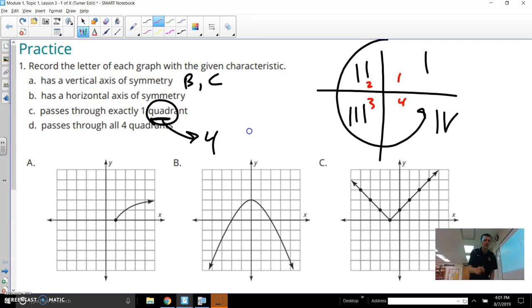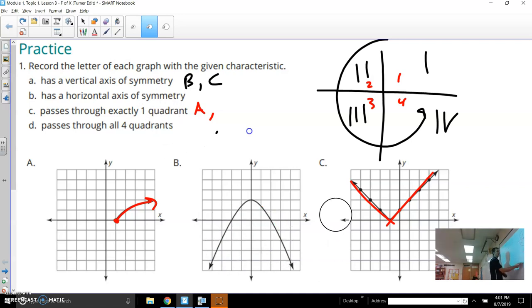It says it passes through exactly one quadrant. I like A. A seems to only exist in this top quadrant. And yes, it does have a point that's on that axis, which isn't really in a quadrant, but I would say it passes through one quadrant for the most part. So I'm thinking about adding graph A there. But B and C, they both seem to go into multiple quadrants. However, it is asking us about if there are any graphs that pass through all quadrants. And I'm thinking B. B seems to pass through all the quadrants here.